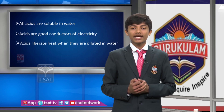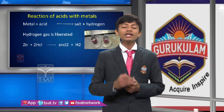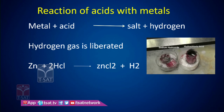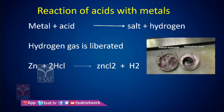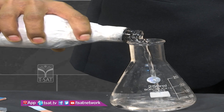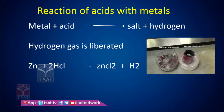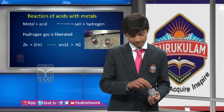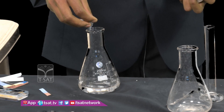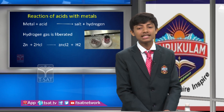When acid reacts with a metal, it produces salt plus hydrogen gas. For example, I am taking a conical flask and adding dilute hydrochloric acid. Then I add zinc, which is a metal. When metal is added to acid, it produces salt plus hydrogen gas — hydrogen gas is liberated.